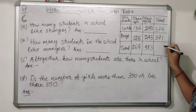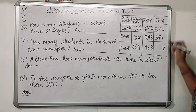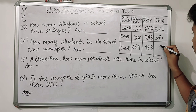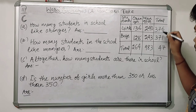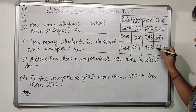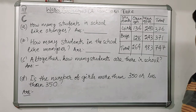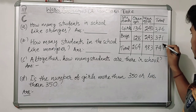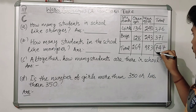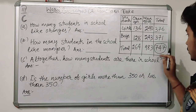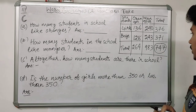So we will add: six plus one is seven, seven plus seven is 14 — four carry one; four plus three is seven. So the grand total is 747. Just put a circle around this number.